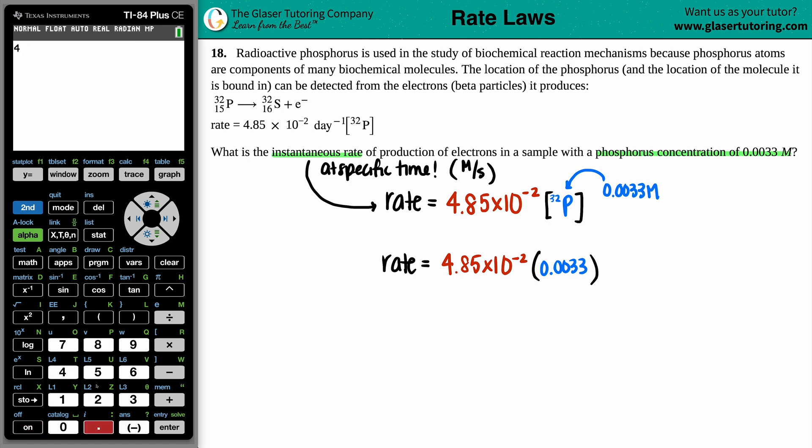So let's go to the calculator. 4.85 second comma means times 10 to the negative second times 0.0033. Good numbers to me. Press enter. And there it is. Looks like we can only use two sig figs. So I'll give the number back in two sig figs. Rate equals 1.6 times 10 to the negative fourth.